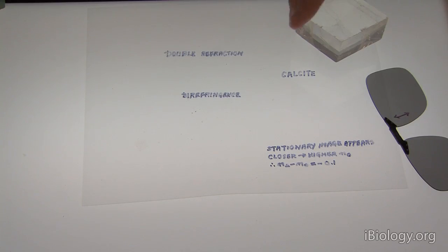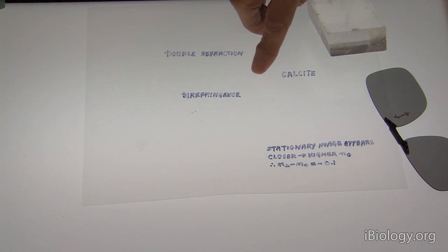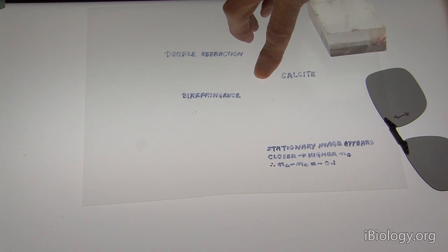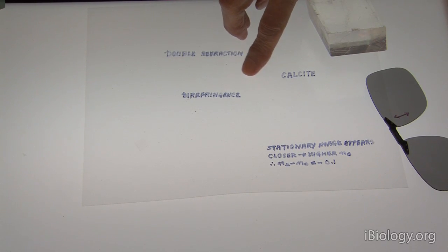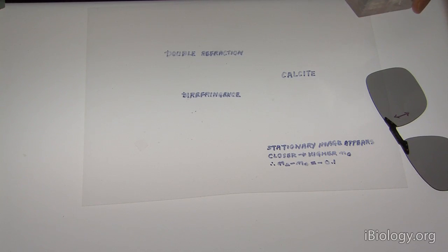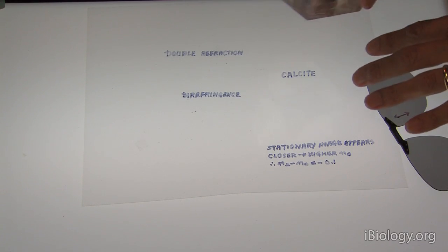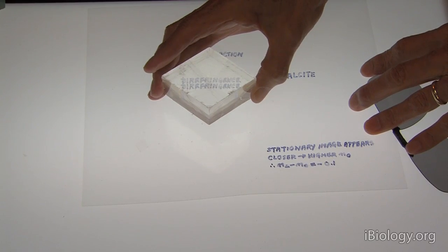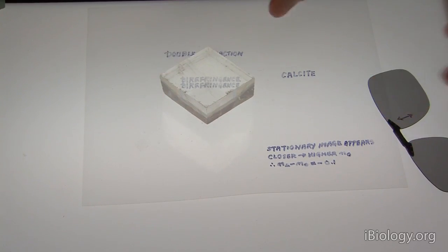What I have here is the word birefringence, which I hope you can see on your screen. In front of this word, I'm going to place a crystal called calcite. Calcite is Iceland spar, a crystal of calcium carbonate, and it's well known because it introduces birefringence or double refraction.